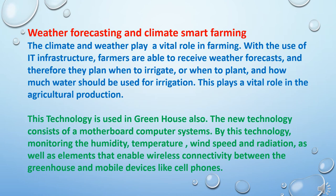Another role of information technology is weather forecasting and climate-smart farming. The climate and weather play a vital role in farming. With the use of IT infrastructure, farmers are able to receive weather forecasts and therefore plan when to irrigate, when to plant, and how much water should be used for irrigation. This technology is also used in greenhouses. The new technology consists of a motherboard computer system for monitoring humidity, temperature, wind speed, and radiation, as well as elements that enable wireless connectivity between the greenhouse and mobile devices like cell phones.